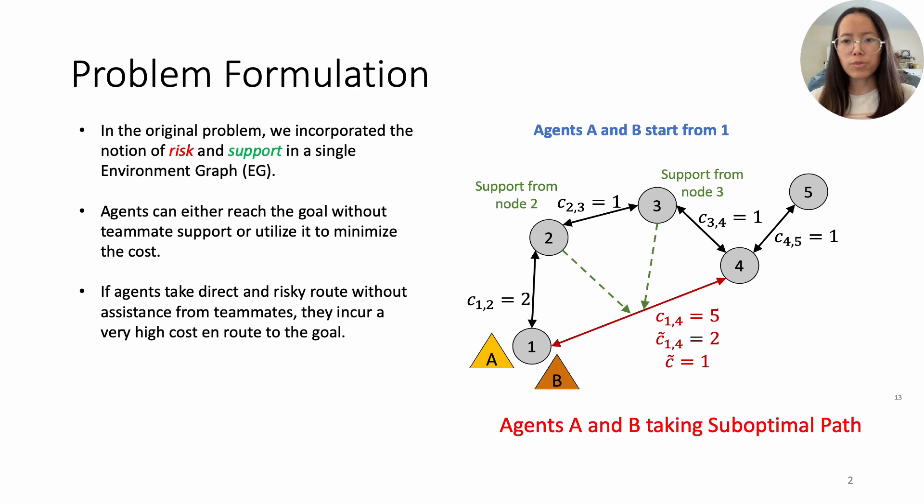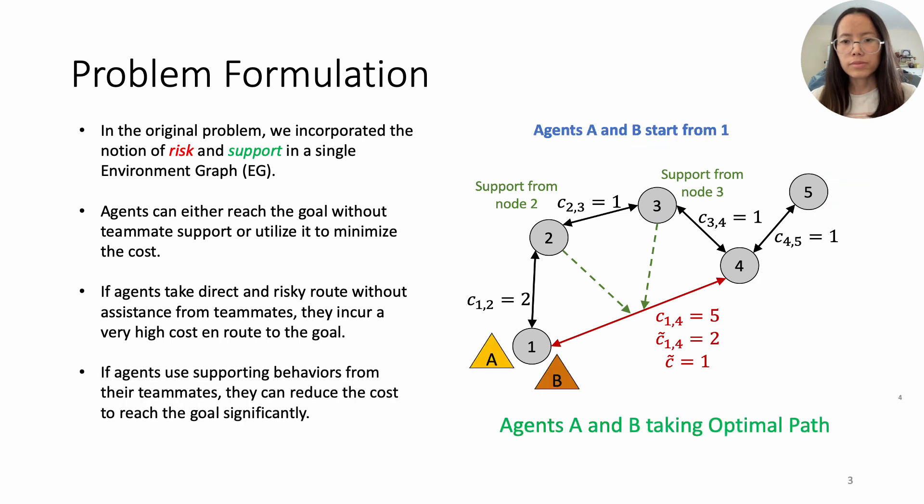In our original problem formulation, we incorporated the notion of risk agent support nodes in a single environment graph EG. If agents choose a risky path without team support, they incur significant cost to reach the goal. However, if agents choose to take support from a teammate, they can minimize the total cost on their way to the goal.